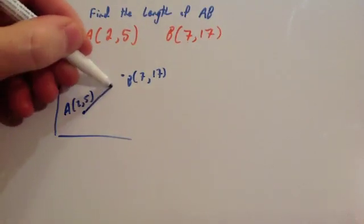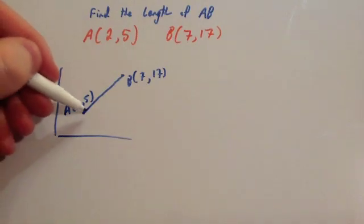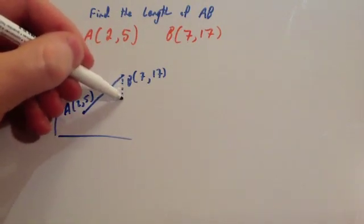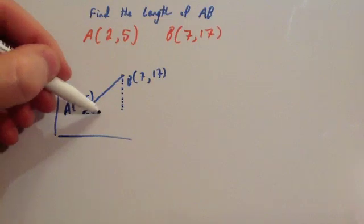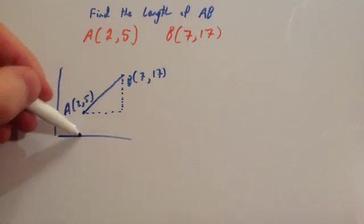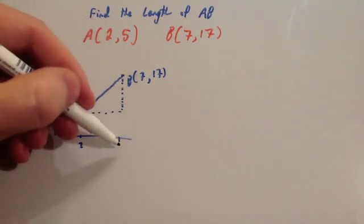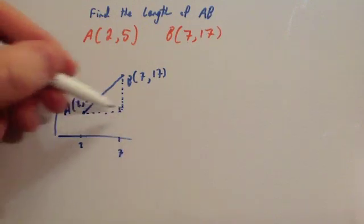If you want to join them up, that would be the line AB. So if you turn that into a little right-angled triangle, like so, this was 2 along and this is 7 along. So that means that the distance from here to here would be 5, the length of this line is 5.